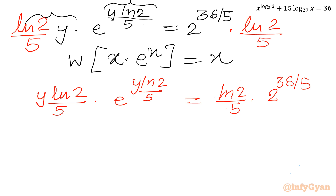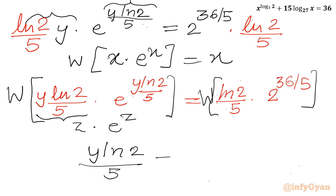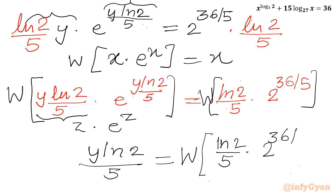Now I apply the Lambert W function to both sides. On the left-hand side, if I presume it is z, then it is e raised to the power z, so the left-hand side gives z, meaning y ln 2 divided by 5. On the right-hand side, it equals Lambert W of ln 2 over 5 times 2 raised to the power 36 divided by 5.